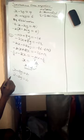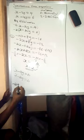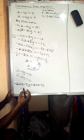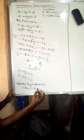Adding negative 2 to both sides: on the left, 2 plus negative 2 equals 0, leaving us with negative 2y. On the right, 4 plus negative 2 gives negative 2. Wait — 4 plus negative 2 is actually 2, so we have negative 2y equals 2.